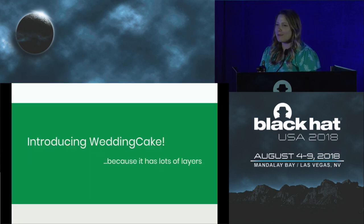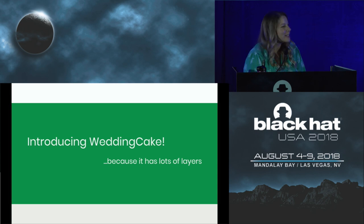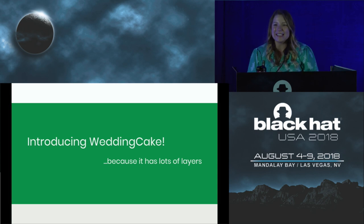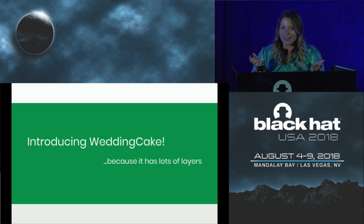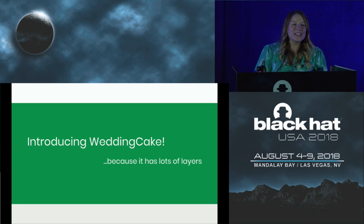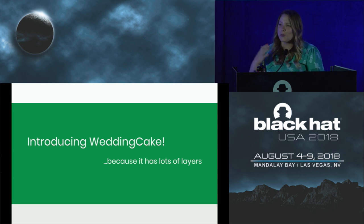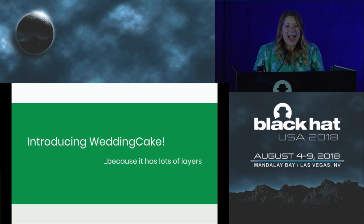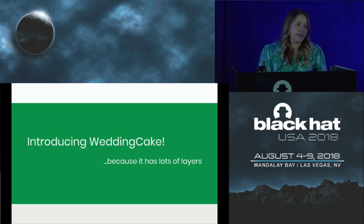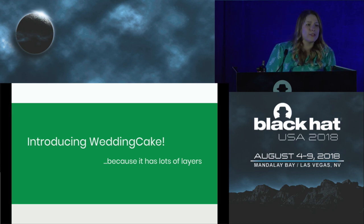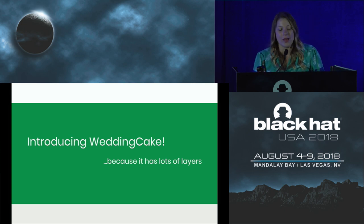We are going to talk about the wedding cake anti-analysis library, which is this native code. Why wedding cake? It's because it's got lots of layers. We're going to go over all of these different layers, why it's so robust, what makes it so interesting, and how you can reverse engineer it more quickly — and what I would have done instead of falling for each of their traps along the way.